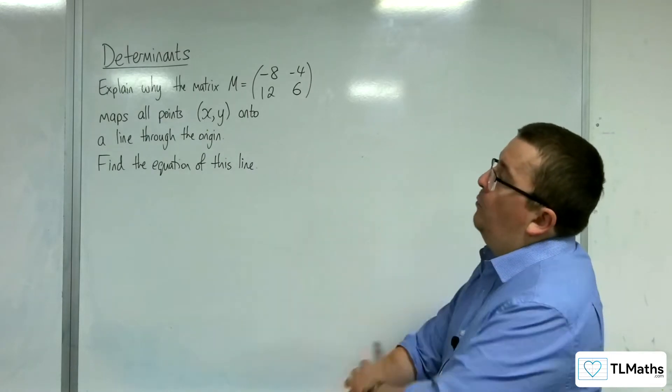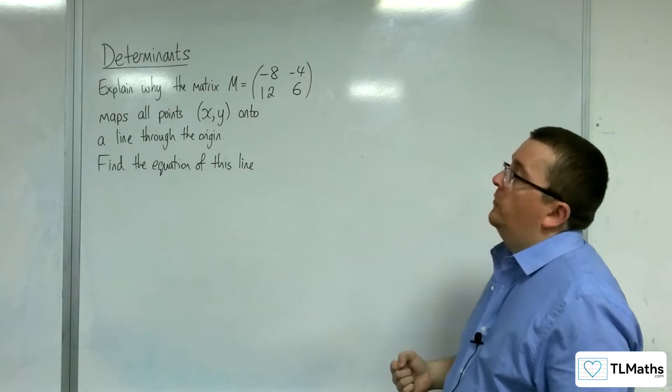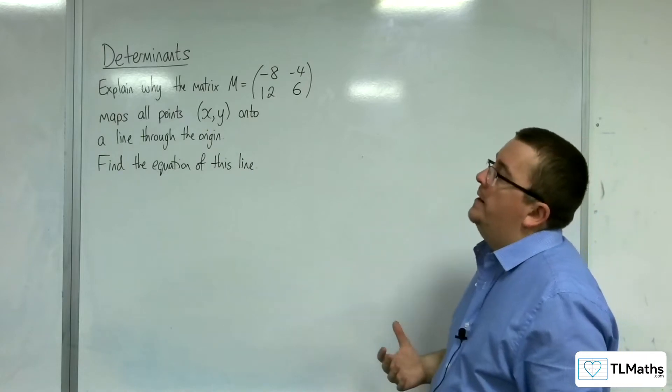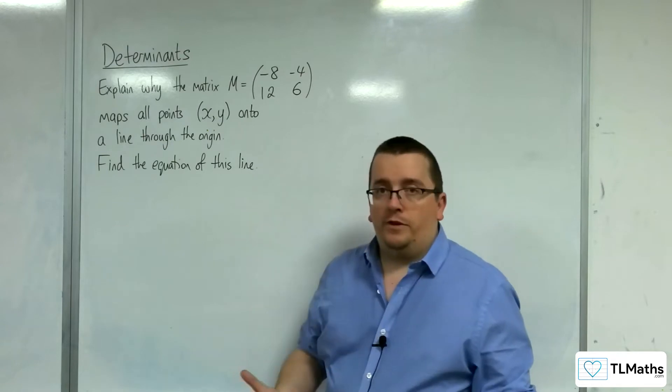So, in this problem, we're kind of continuing this on, but just looking at another matrix. Explain why the matrix M maps all points x, y onto a line through the origin.